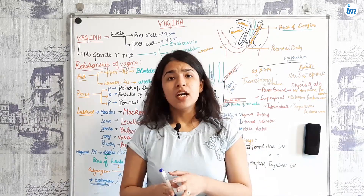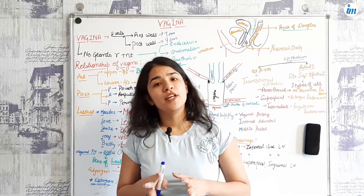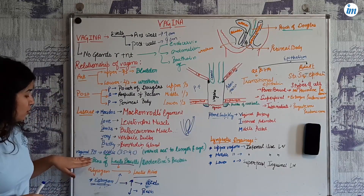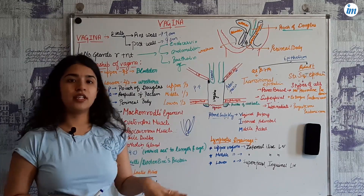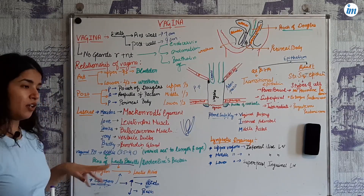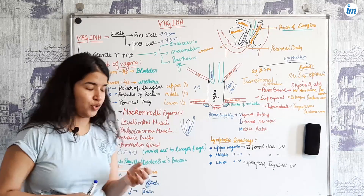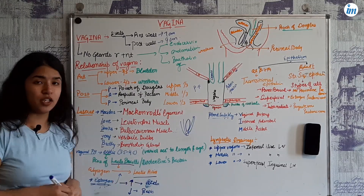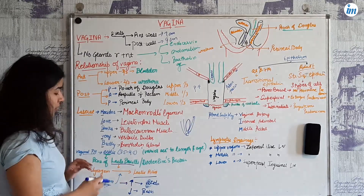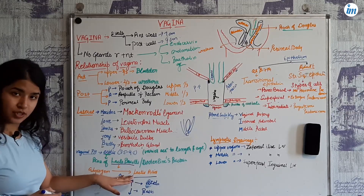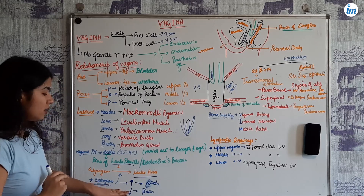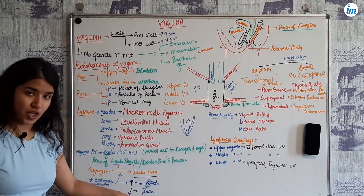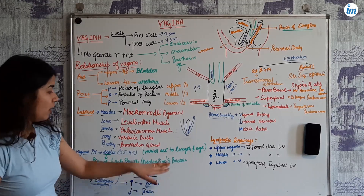Now, the vaginal pH is a very important section. Vaginal pH is generally acidic — that is 3.5 to 4.5. The mechanism behind this acidity: vaginal cells contain glycogen, which is converted into lactic acid by the bacteria lactobacillus, also called Doderlein's bacteria. The hormone estrogen also contributes to this acidity.